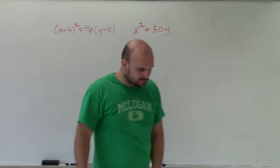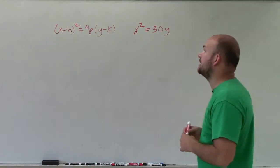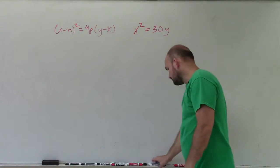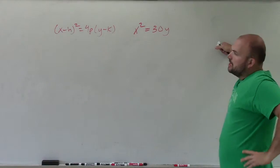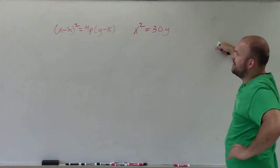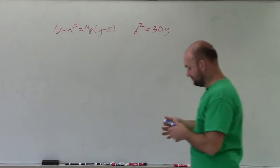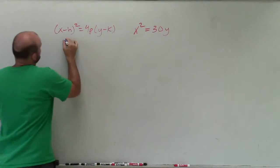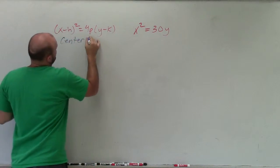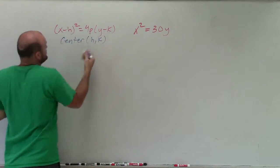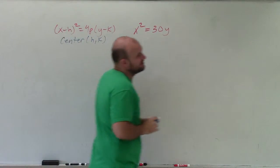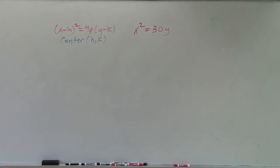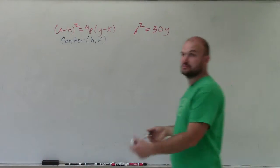By looking at this, we can see that our center — or vertex — is h comma k. Since we don't have any h and k values here, I'm not subtracting anything from x or y. So our center is going to be at 0, 0, which is nice.